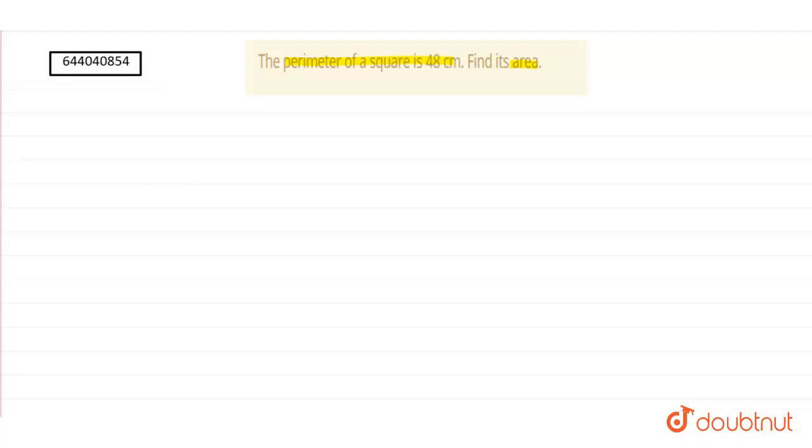we know, the formula of perimeter of a square is four times the length of its side. And it is given in the question that the perimeter of the